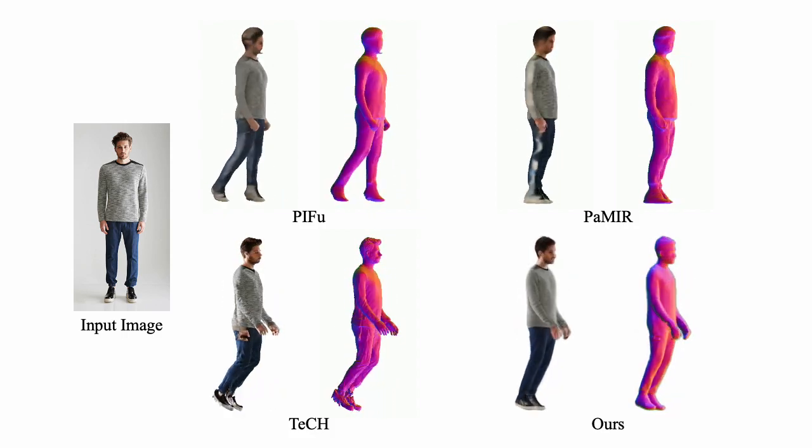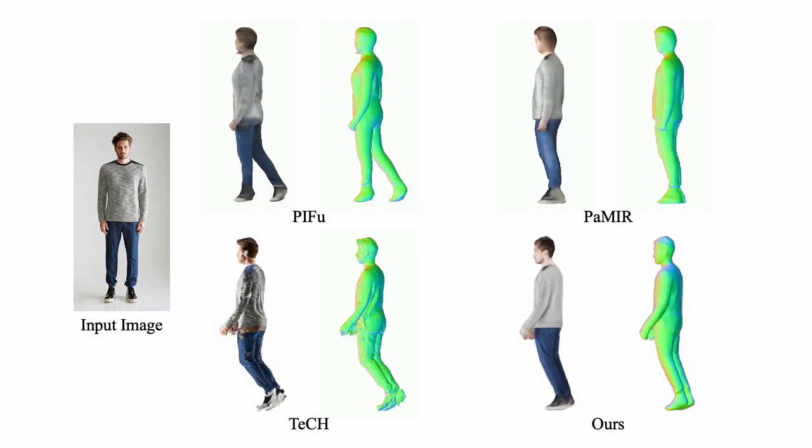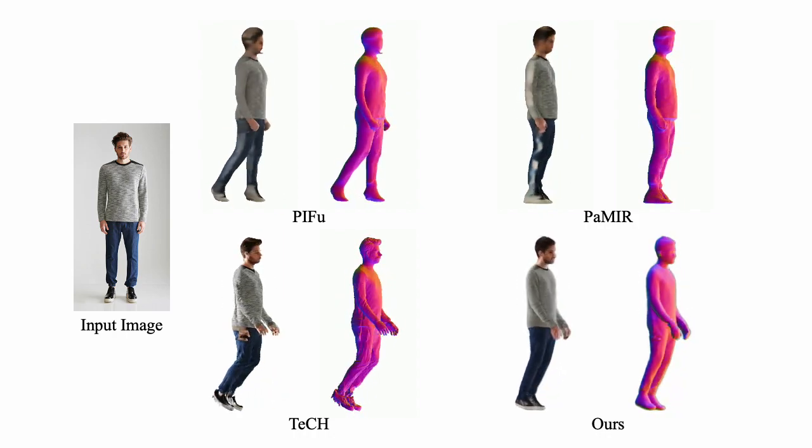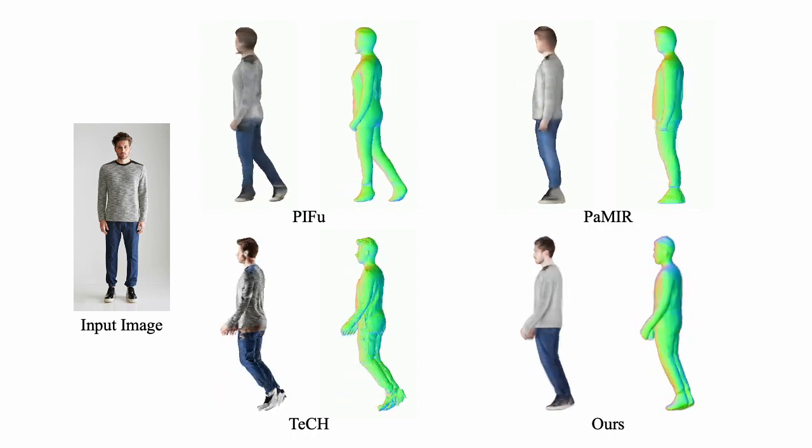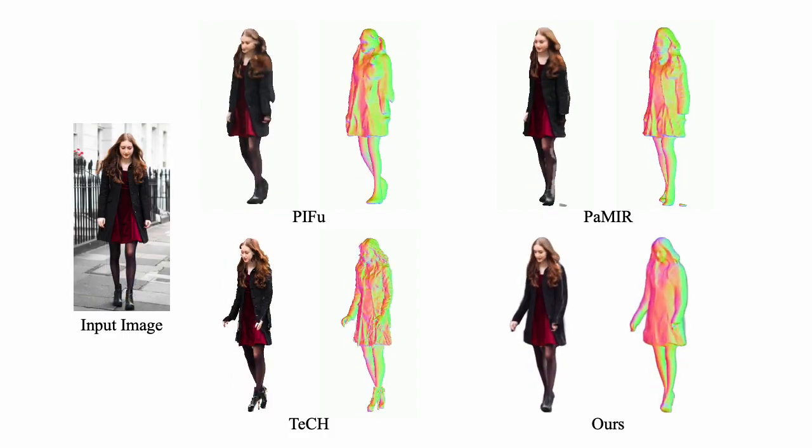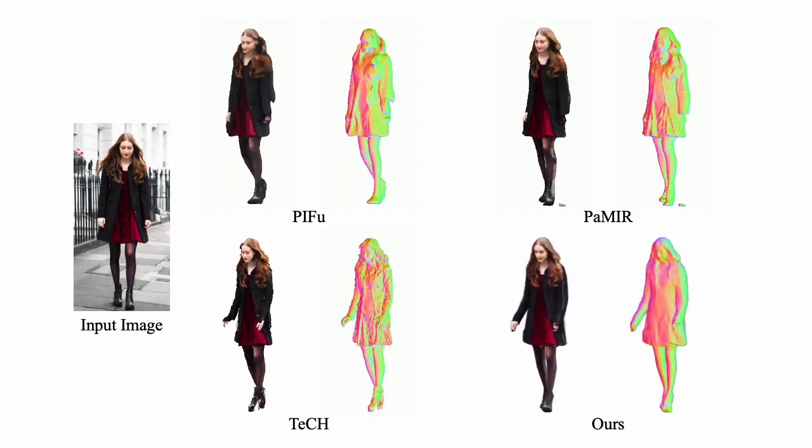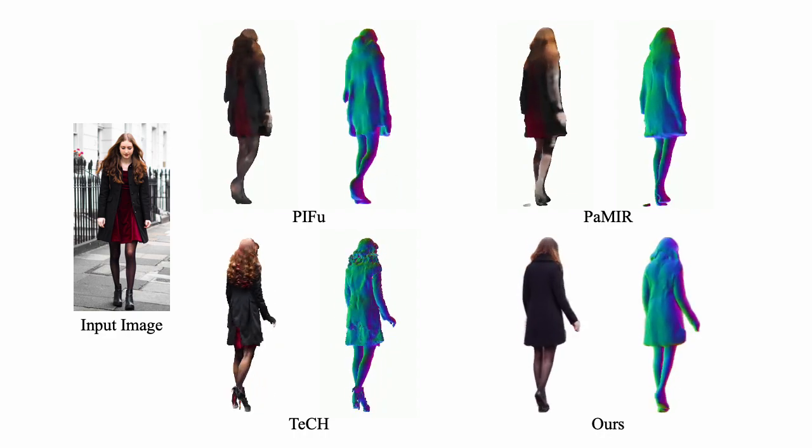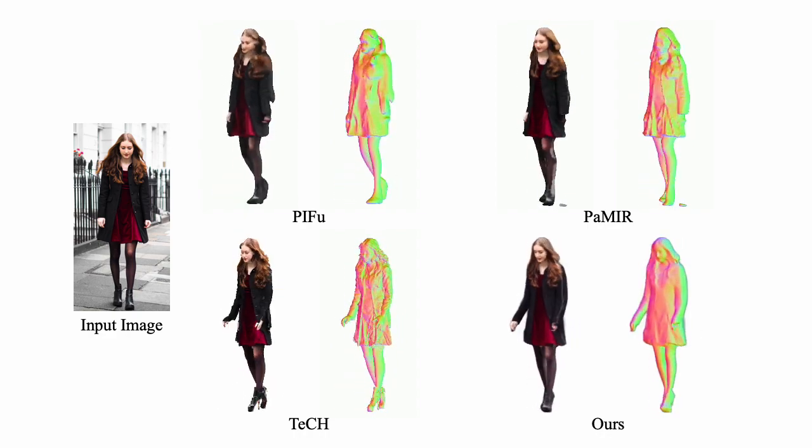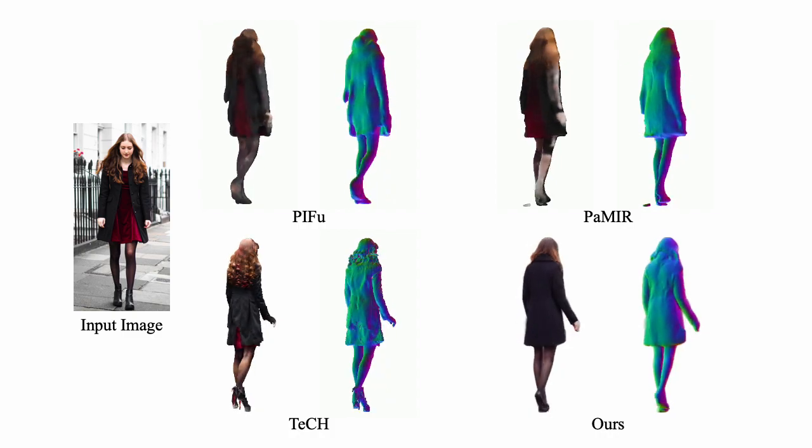Here, PIFu and PAMIR are two learning-based methods that acquire the ability to infer the geometry and texture of a 3D-clothed human from input images after being trained on a large number of scanned human datasets. Their performance thus is limited by the training data and model design, struggling to infer detailed textures and fine geometry from a single image, particularly in areas invisible to the input.